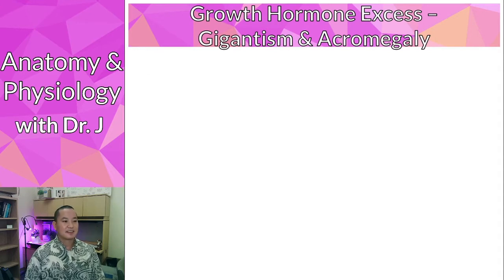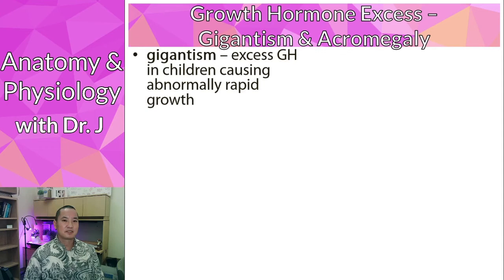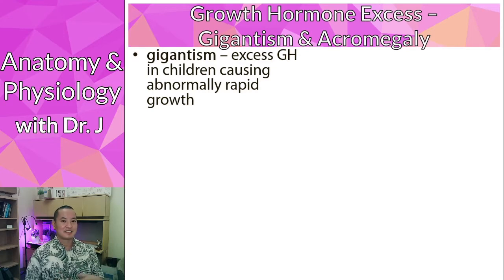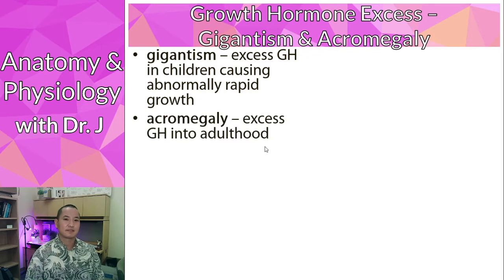They both involve excess growth hormone, but gigantism is reserved exclusively for pediatrics and children. This is excess growth hormone causing children to shoot up like weeds, growing way faster than their peers with elevated levels of growth hormone. Acromegaly, on the other hand, is when you have this excess growth hormone into adulthood.